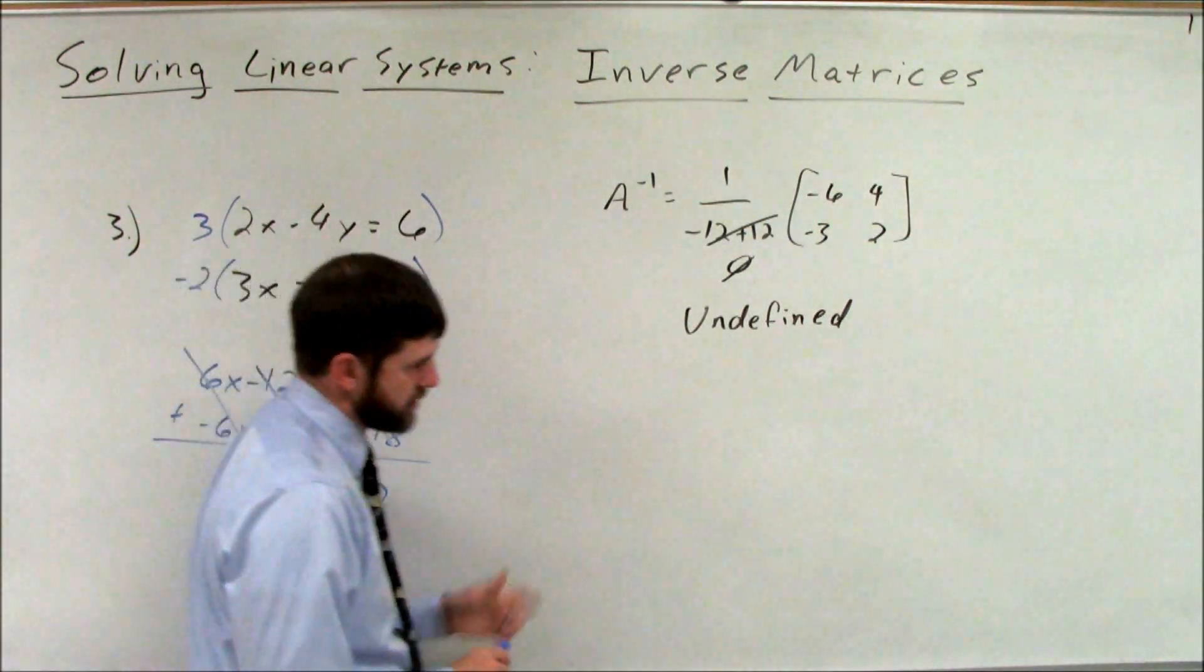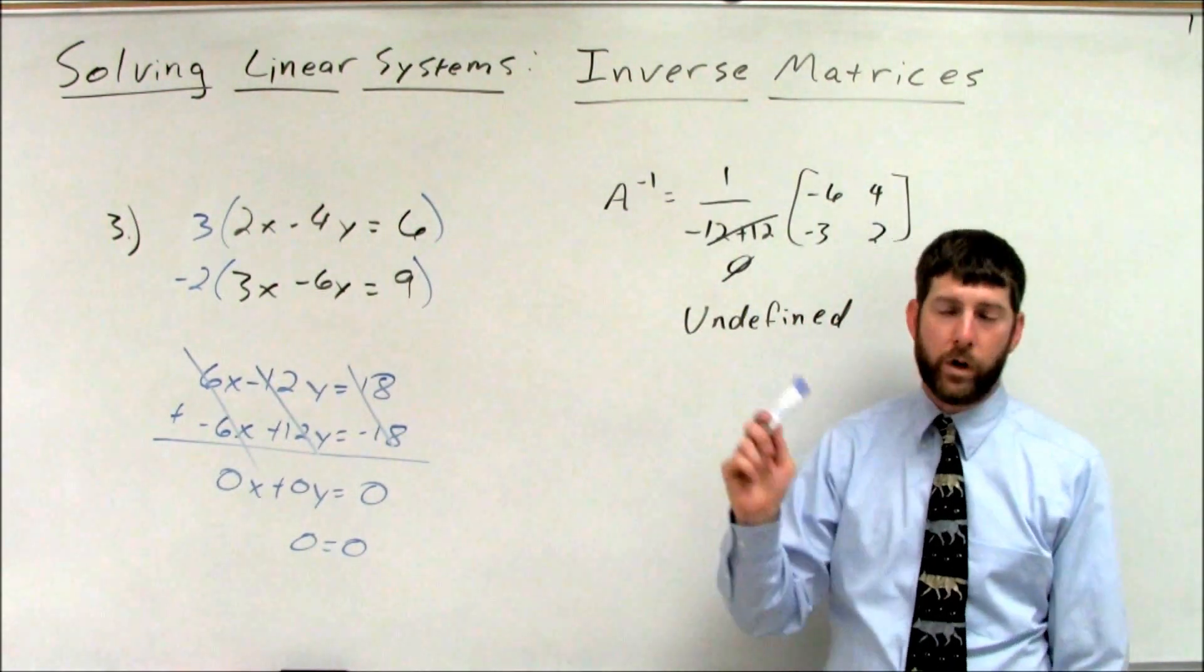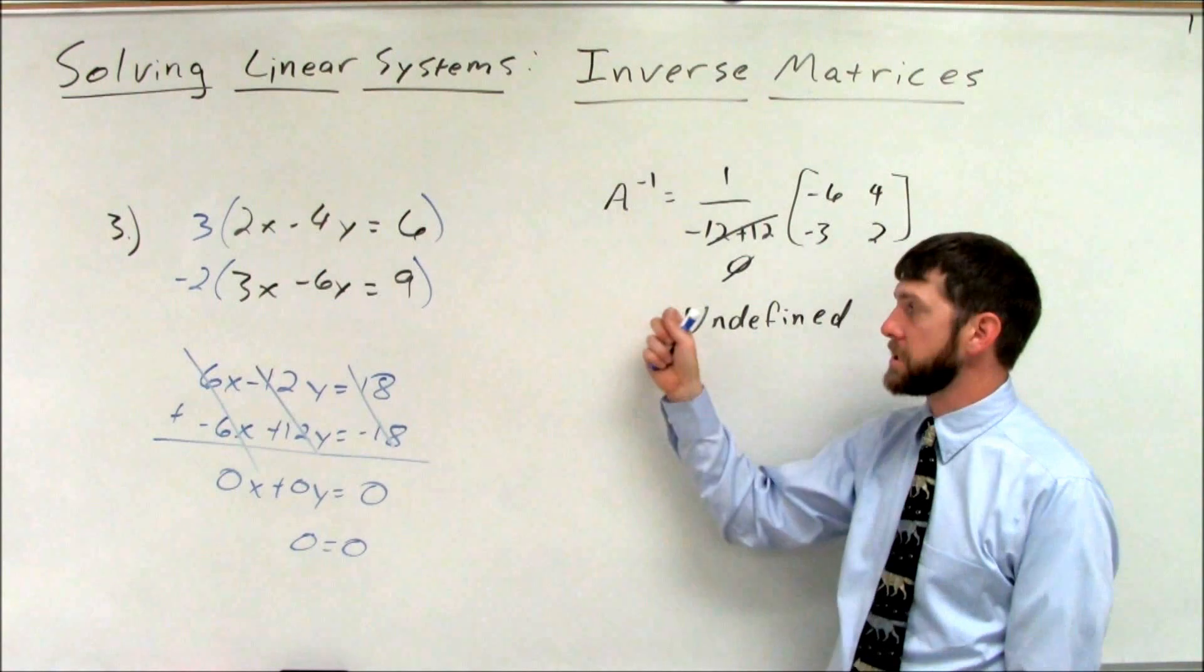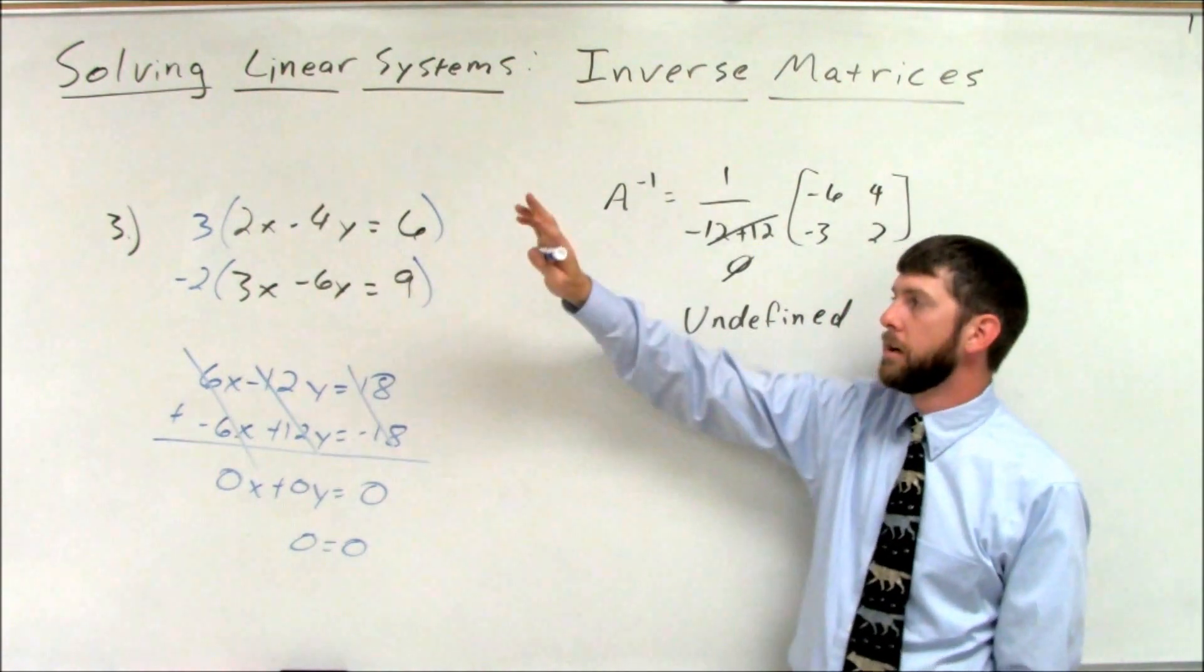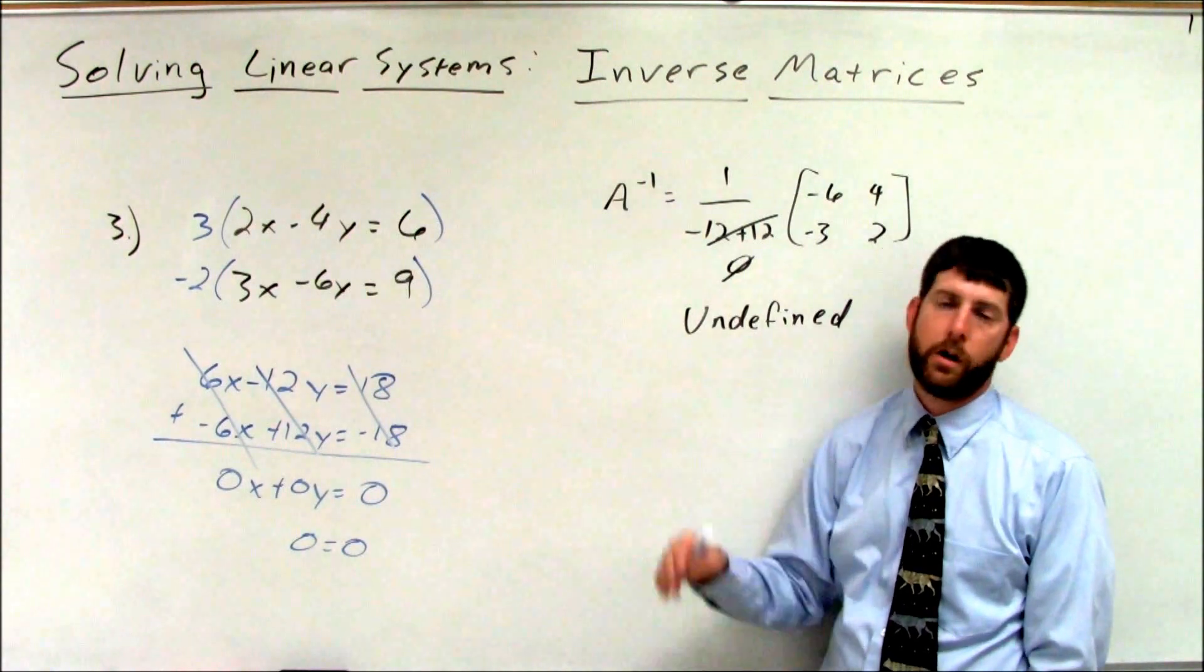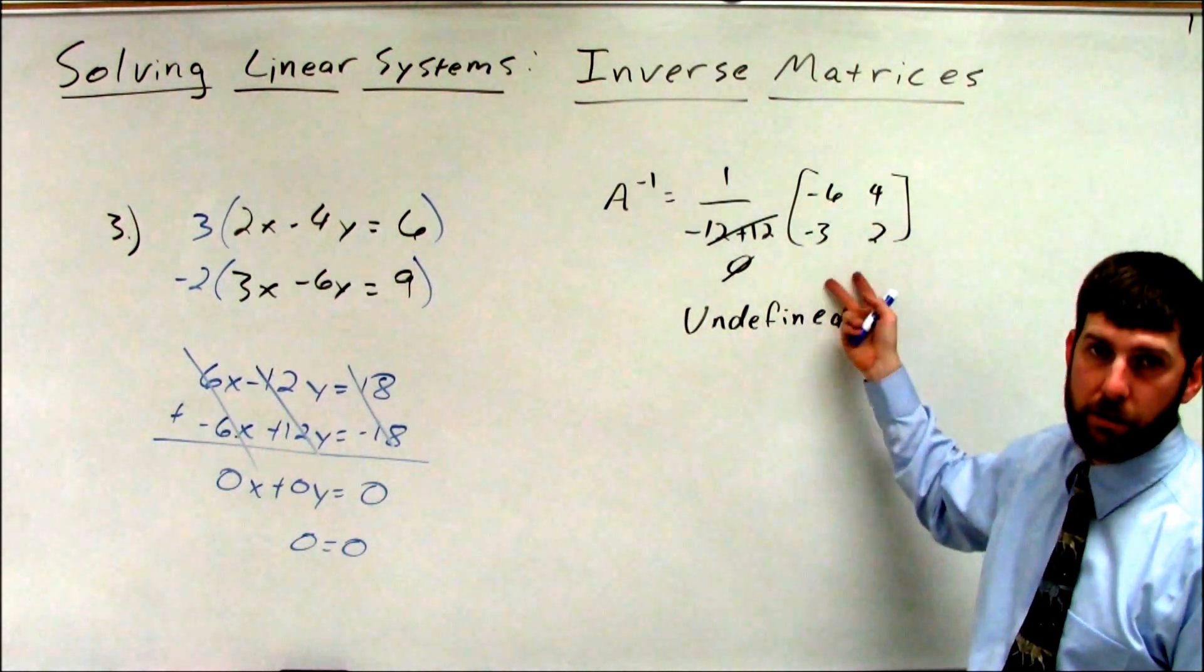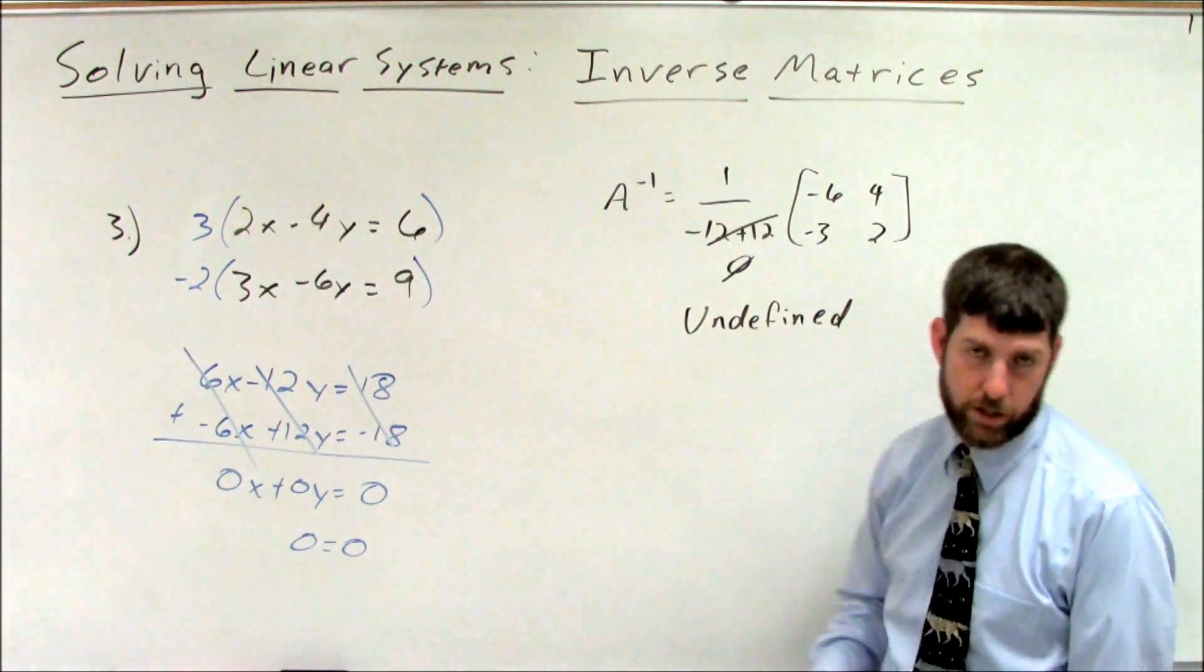This would actually be infinitely many solutions. So what happens is when we see that our determinant is 0, when we see our determinant is 0 in these systems of equations, it's going to be a result of the original system either being an infinitely many solution system or a no solution system. Parallel lines or identical lines. Because in those two systems, you have the same slopes, and the same slopes when you multiply diagonally to get a determinant are always going to give you a 0.